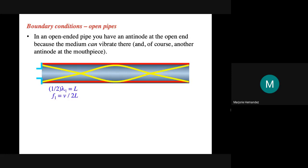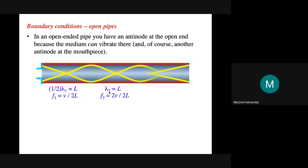For the second harmonic of the open pipe, the length is equivalent to the full wavelength — quarter, half, quarter — giving F equals 2V over 2L. For the third harmonic, add one node and one antinode with both ends still as antinodes. The length is three-halves of the wavelength and the frequency is 3V over 2L. Note that for the open pipe, the equations for the harmonics are the same as for the node-node string boundary condition.